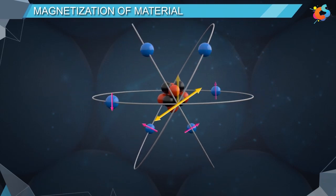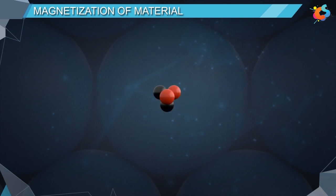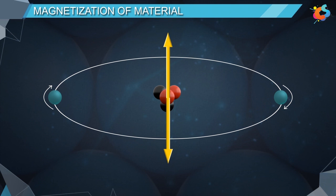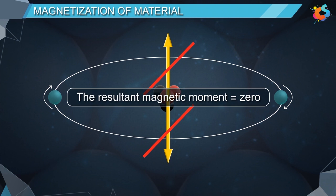The resultant magnetic moment of an atom is the vector sum of all the magnetic moments in an atom, and it depends on the number of unpaired electrons. Some atoms contain paired electrons in all their orbitals. Consider helium atom, which contains only one pair of electrons. The paired electrons have orbital motion and spin opposite to each other, so their magnetic moments have the same magnitude but opposite directions, and cancel each other out — the resultant magnetic moment is zero.